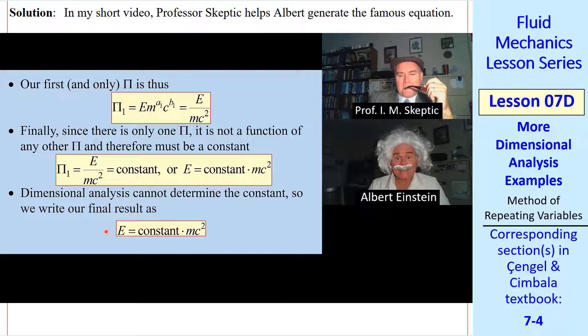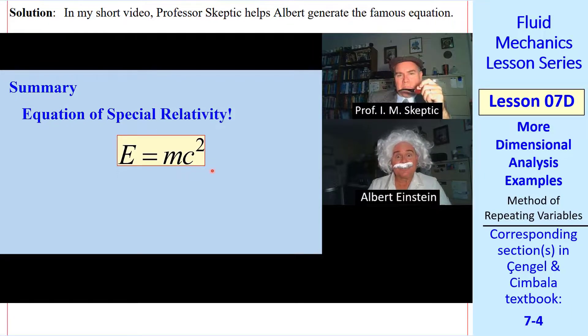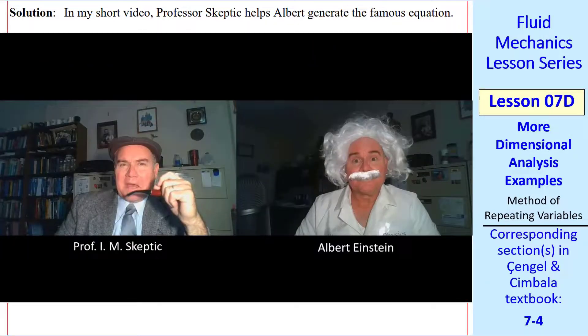Well, I think I can prove that the constant must be 1. Well, then here's your final result. e equals mc squared. Well, that was relatively simple. Hmm, relatively. We shall call it the equation of special relativity. Thank you, Professor Skeptic. You're welcome. Goodbye. A nice day, Albert.